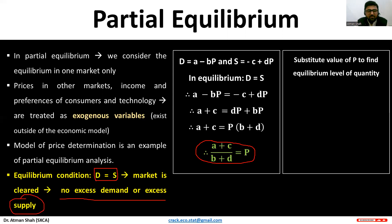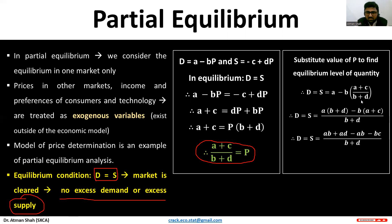Substituting into the demand equation: in equilibrium, demand equals supply equals a minus b times (a + c)/(b + d). Doing the algebra, we get the equilibrium level of quantity: Q* = (ad − bc) / (b + d). So this is the equilibrium quantity.